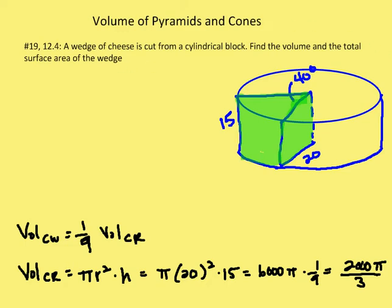Problem number 19 gives us a cheese wedge and a cheese round. The cheese round is the entire area of cheese, and the cheese wedge is the green portion. The question asks us to find the volume and the total surface area of the wedge, which is cut from a cylindrical block. Let's take care of the volume first — what is the volume of this cheese wedge?